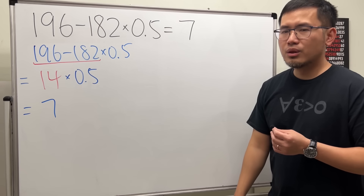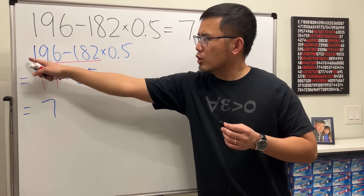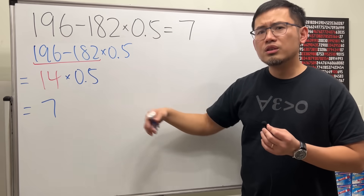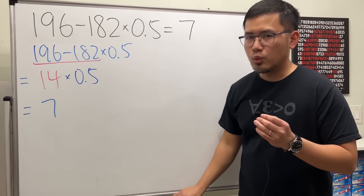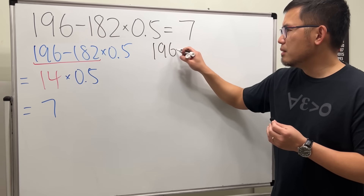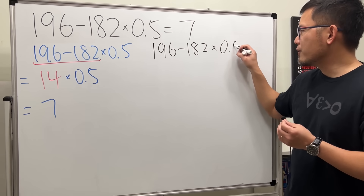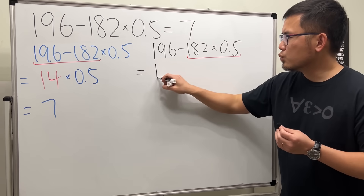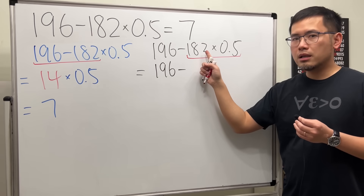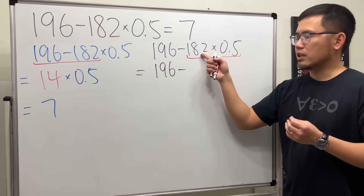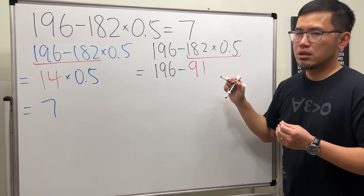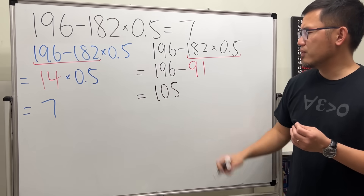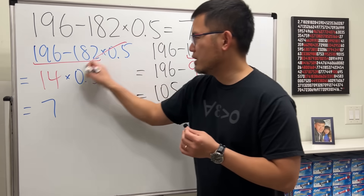But as we all know, this is not correct. There are no parentheses around that, so this is just a subtraction and this is a multiplication. We're supposed to multiply first based on order of operations. So 196 minus 182 times 0.5 — we do the multiplication first: 182 times 0.5 is 91. Then 196 minus 91 gives us 105.